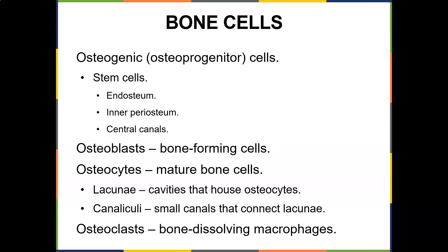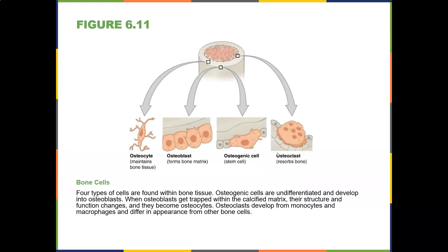Osteoclasts are the bone-dissolving macrophages. They develop from bone marrow stem cells — several stem cells fuse to form one osteoclast — making them large, typically with three to four nuclei but sometimes up to 50. The side facing the bone has a ruffled border. The lysosomes release enzymes that digest organic components; dissolving bone tissue is called osteolysis. Know the difference between osteogenic stem cells, osteoblasts, osteocytes, and osteoclasts — definitely expect that on the quiz.